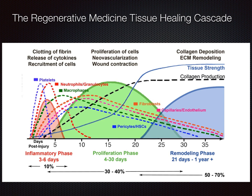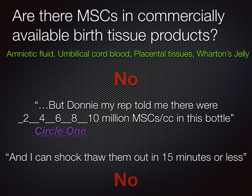Let's get to some common questions, because we have to debunk some myths before we get to the current state of science. Question number one: are there MSCs in commercially available birth tissue products? By birth tissue products, I'm referring specifically to amniotic fluid, umbilical cord blood, placental tissues, and Wharton's jelly. The short answer is no. There are not MSCs that are functional or alive at the time of delivery in a doctor's office with these commercially sold products. I often get a comment from colleagues saying their rep told them there were two, four, six, eight, or ten million MSCs per CC in the bottle.